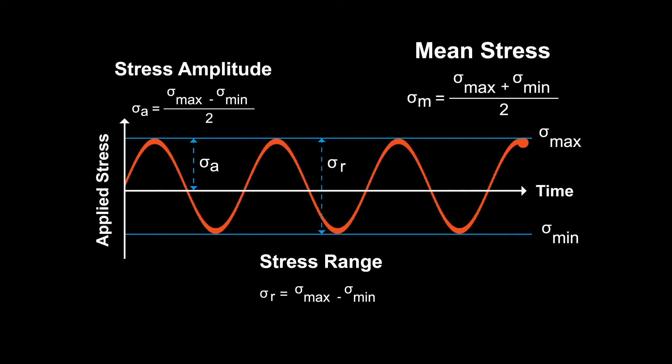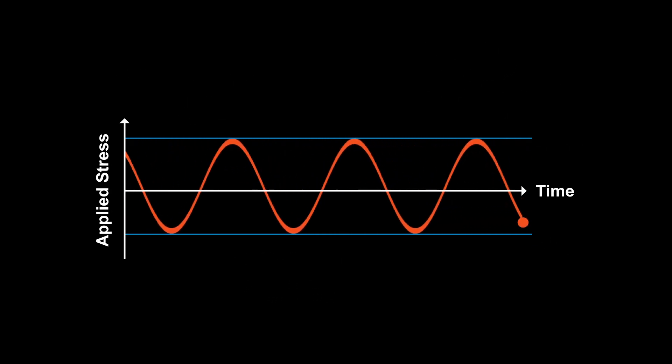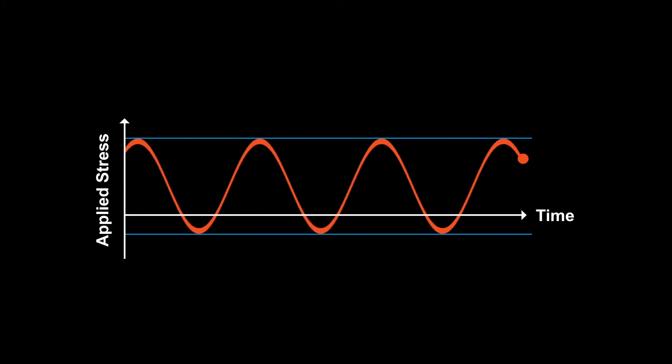Finally, the mean stress, as the name implies, is the average of the minimum and maximum stresses. In this example, as the waveform is fully reversed, the mean stress here is zero. However, we can have a mean stress that is greater than zero. Having a tensile mean stress will normally cause a decrease in the fatigue life of the component.